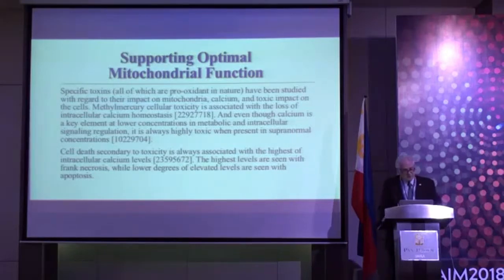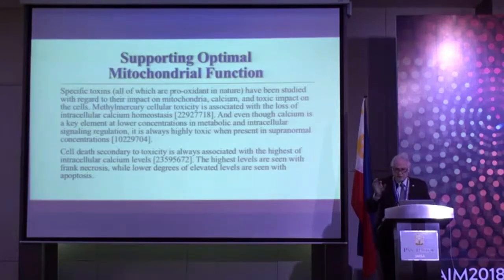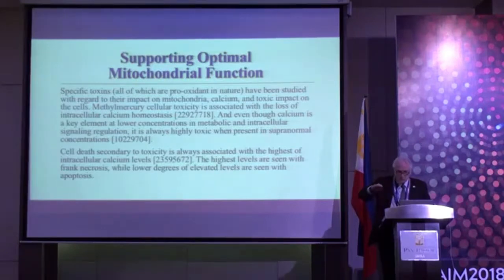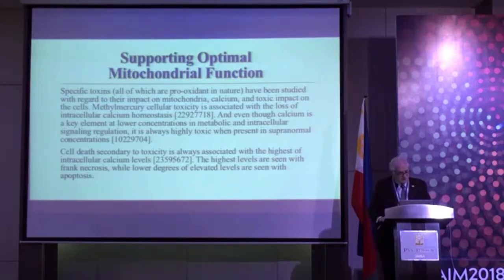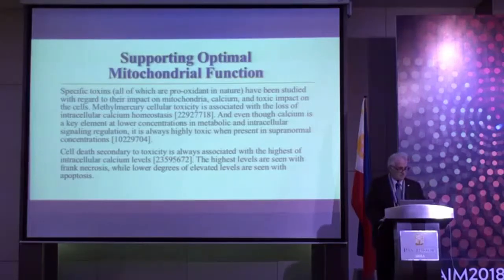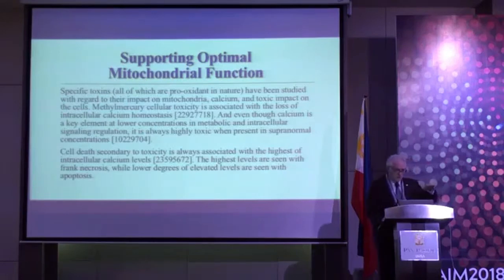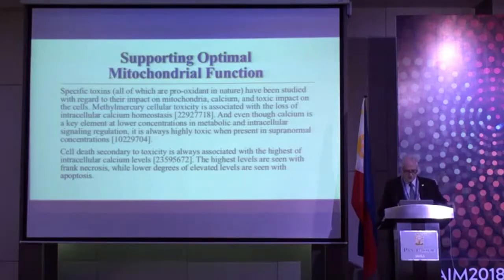They've even studied specific toxins — they're all pro-oxidant. In animal and cell studies, as the cell gets more toxic and the toxin exerts its effect — in this case methylmercury — it again elevates intracellular calcium. Even though calcium is a key essential nutrient and you die without it, you only need a very limited amount; above that limited amount it turns from a nutrient into a toxin.